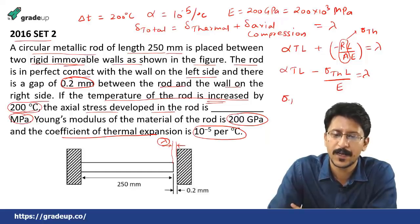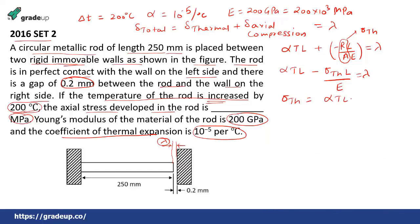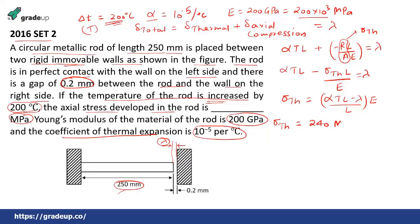So sigma-thermal equals alpha times T minus lambda divided by L, all multiplied by E. Substituting: alpha is 10 to the power minus 5, delta T is 200, L is 250 mm, lambda is 0.2 mm, and E is 200 into 10 to the power 3. Solving this gives the thermal stress as 240 megapascal. This is a very standard question — just supply all the values and get 240 megapascal.